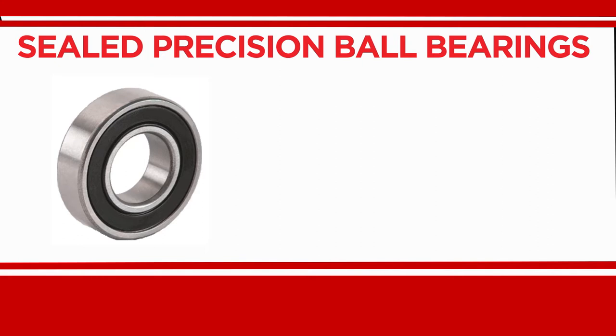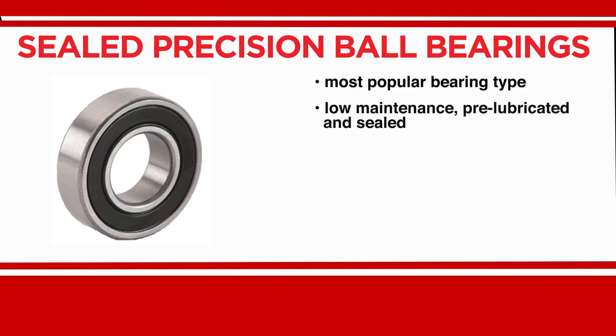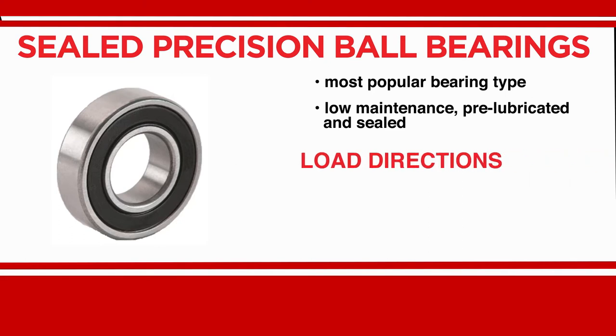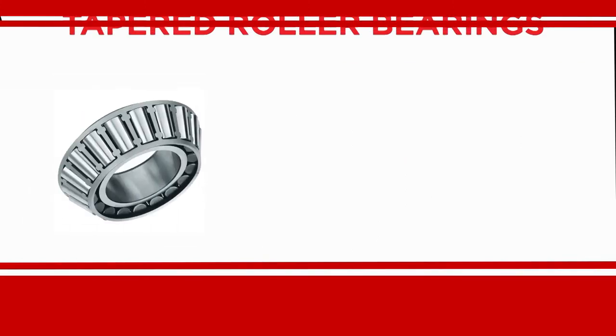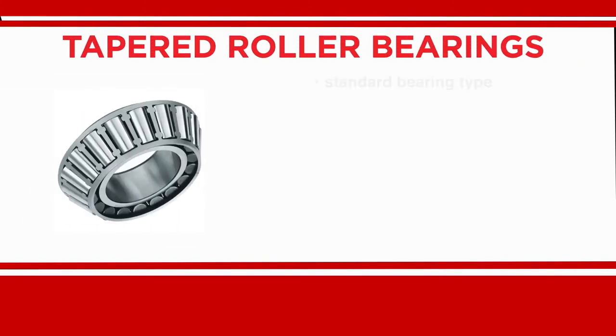The sealed precision ball bearing is generally the default standard in most industrial wheels. A bearing is pressed fit into each side of the wheel and provides easy rolling capabilities. This bearing accommodates downward forces as well as limited side or axial forces.